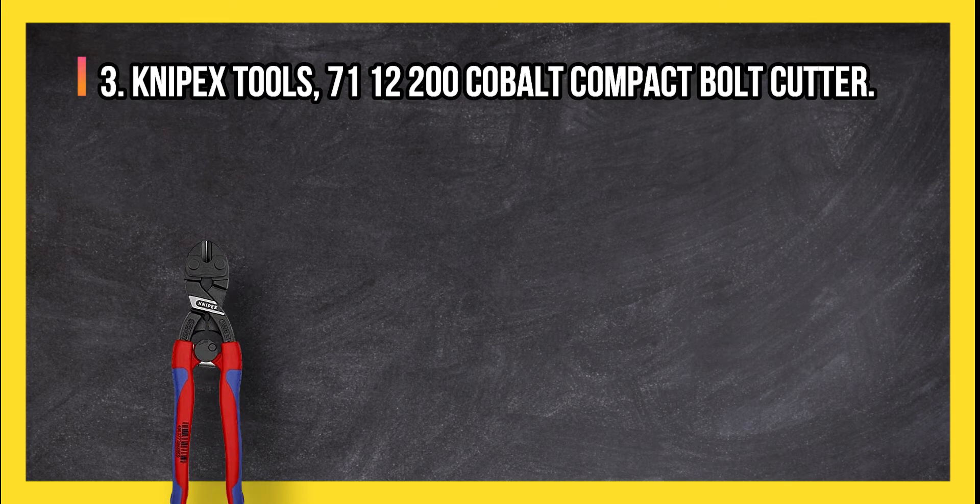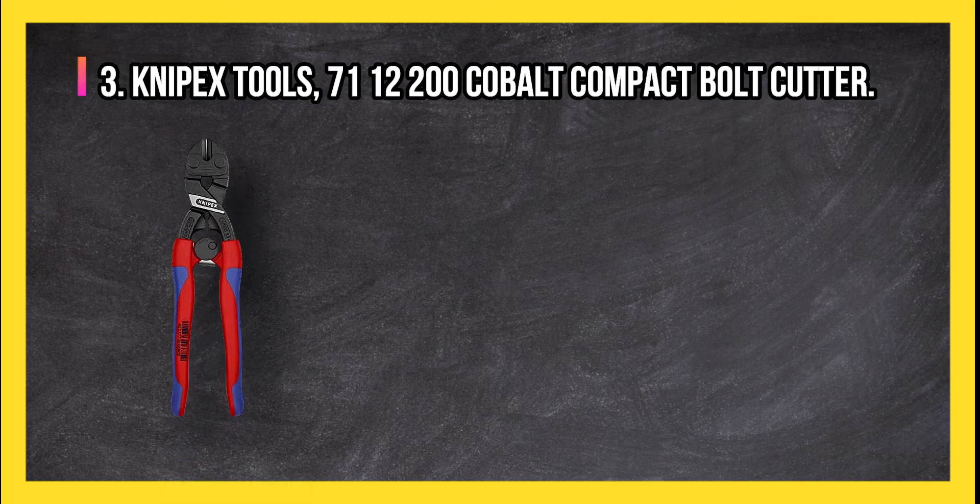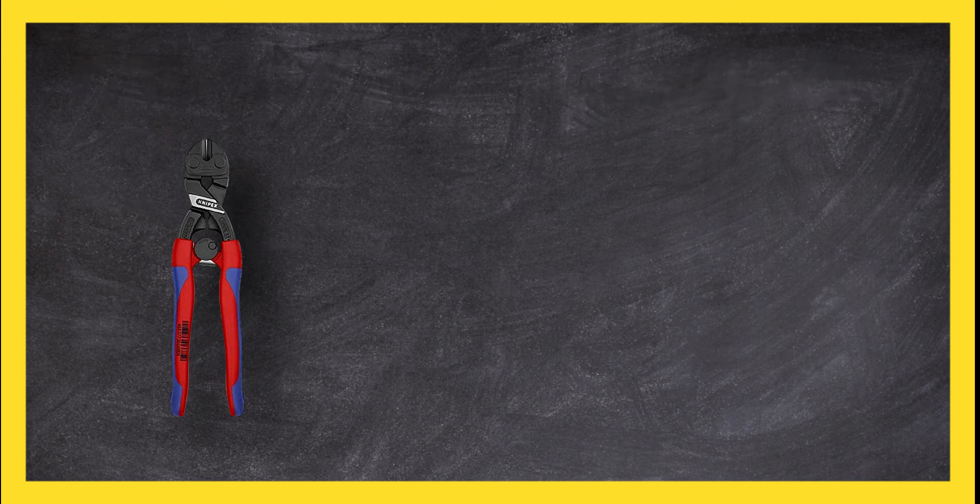At number three, Knipex Tools 71 12 200 Cobalt Compact Bolt Cutter cuts wire up to one quarter of an inch thick with ease.